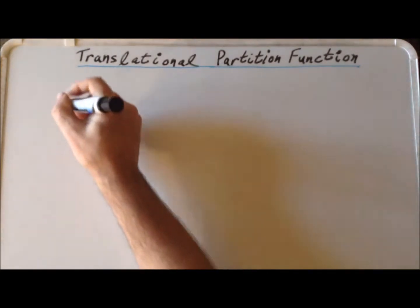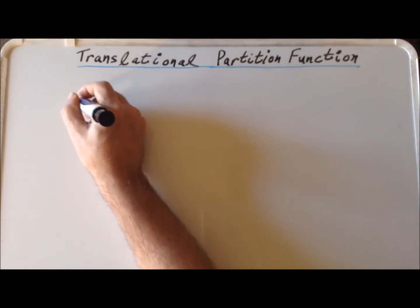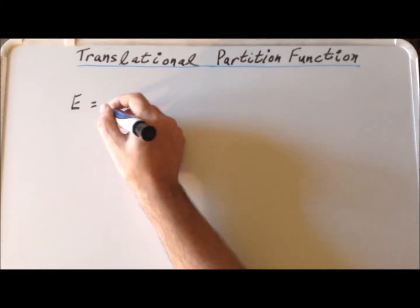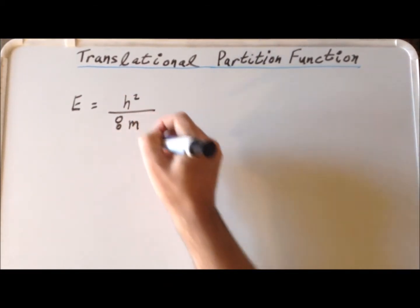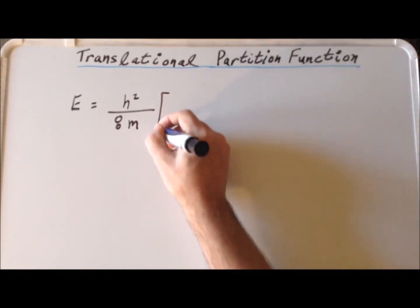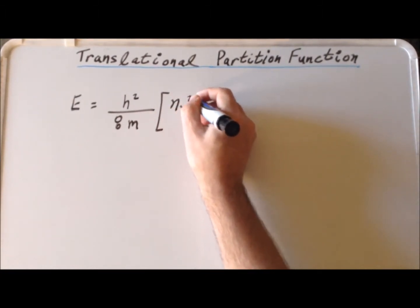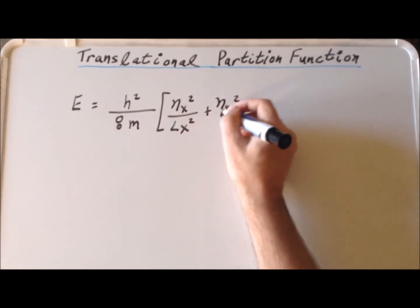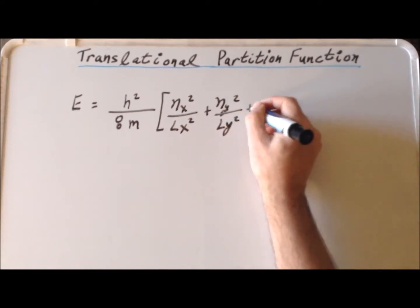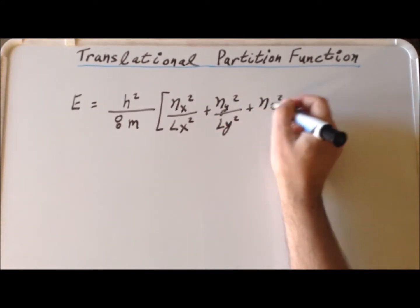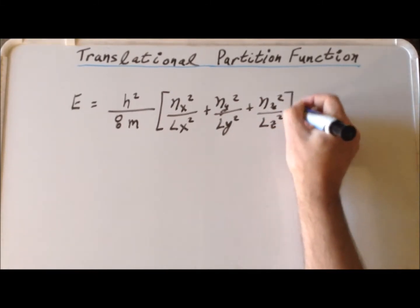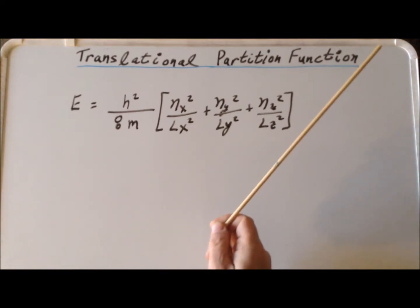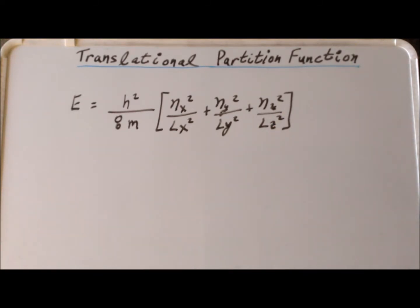Recall that the energy of translational motion in three dimensions has the following form. We have h squared divided by 8 times m, and then this is multiplied by n_x squared over l_x squared plus n_y squared over l_y squared plus n_z squared over l_z squared. If you check out the links which you'll see here, you can see how we derive that expression.